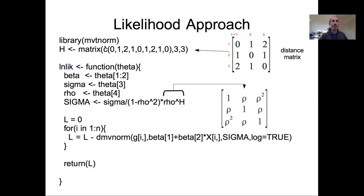Next, I'm constructing the matrix H, which is a distance matrix. H tells me the pairwise distances in time between observations — time point 1 is distance 0 from itself, time point 2 is distance 1 from time point 1, and time point 3 is distance 2 from time point 1. The integer values imply that the re-measurement period is constant, though that assumption can actually be relaxed.